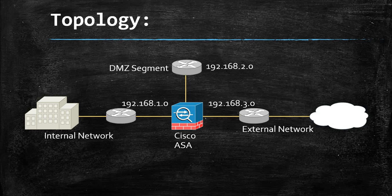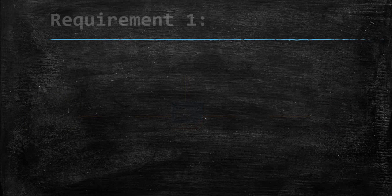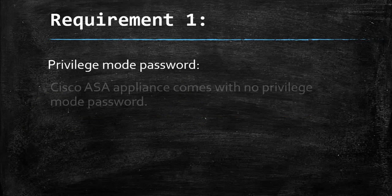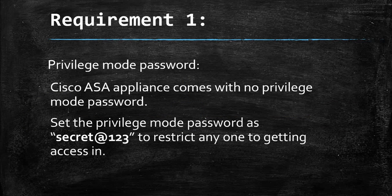The basic configurations which are needed: Requirement 1 is the privilege mode password. By default, when the ASA comes out of a box, it has no password. So as per this requirement, we have to set our password as 'secret@123'.